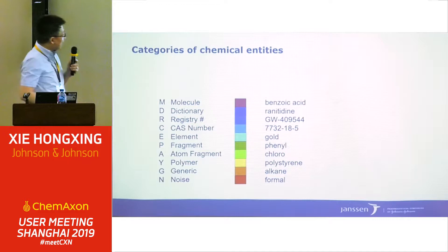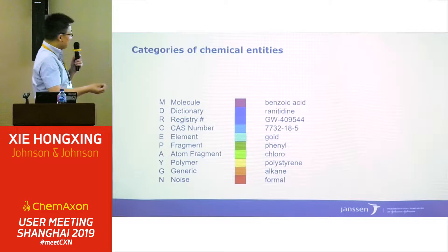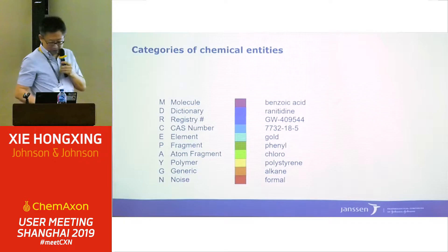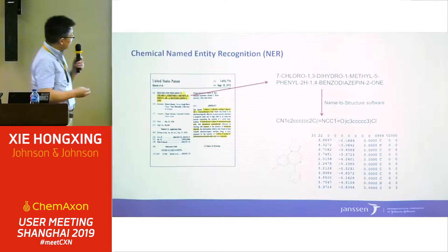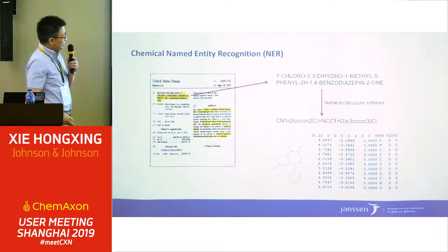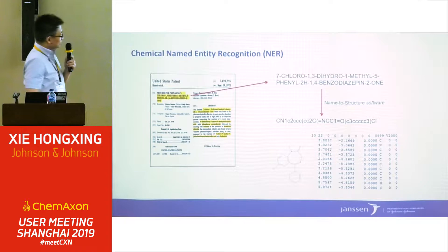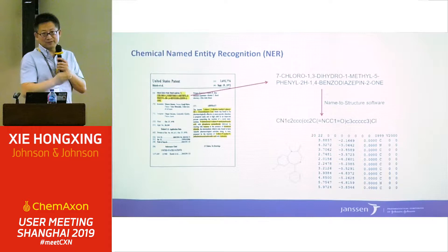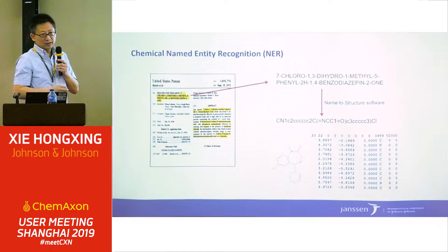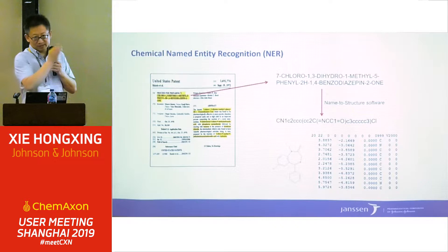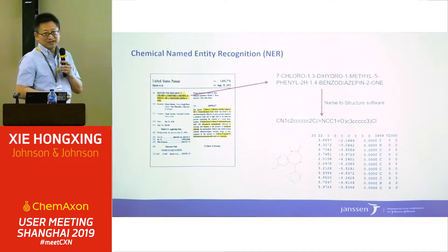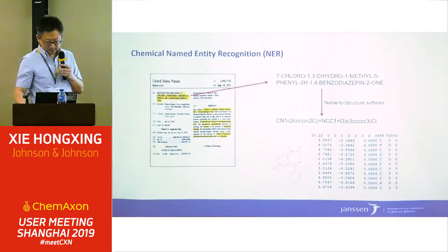This is an example of how we classify chemical entities into different categories: molecule, dictionary name, registration numbers, CAS numbers, elements, fragments, and so on. As I mentioned, we needed to convert the name into a structure — either to SMILES or to a MOL format. We tested a number of converters from different vendors. One of the converters from Chemax, we used that conversion program as well. Each program has its strong points and weak points, and they sometimes give different results.